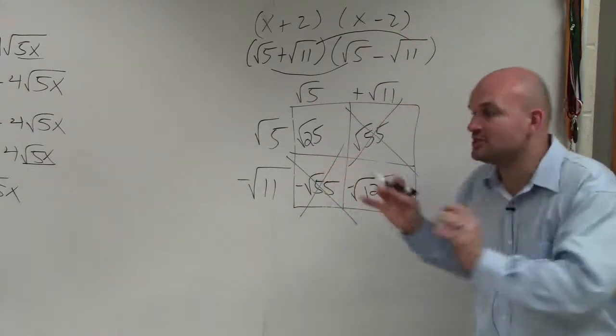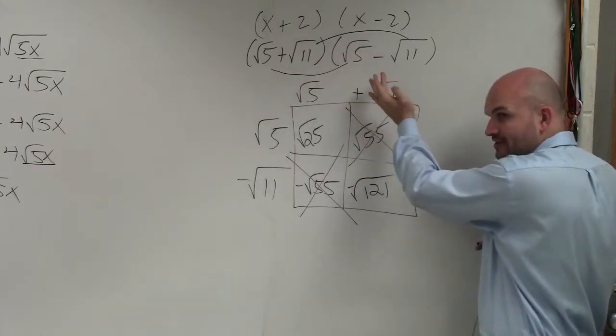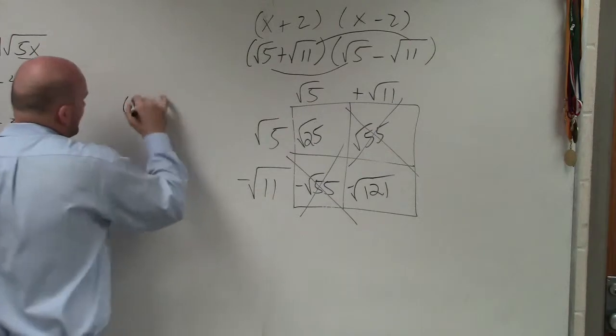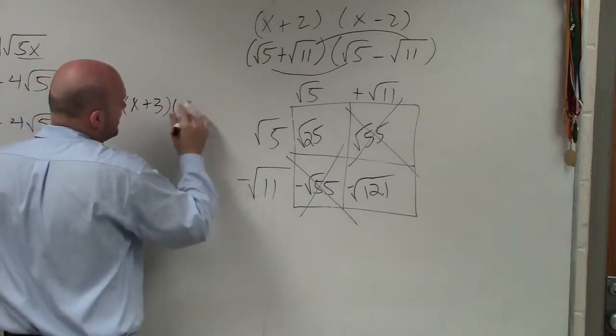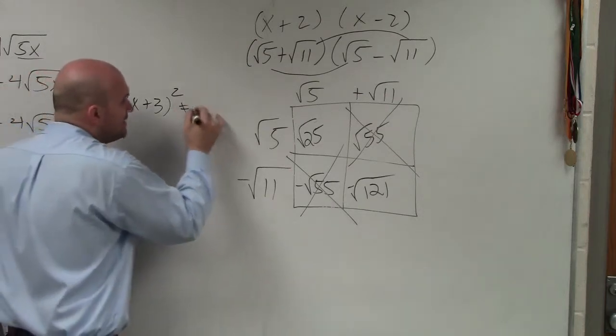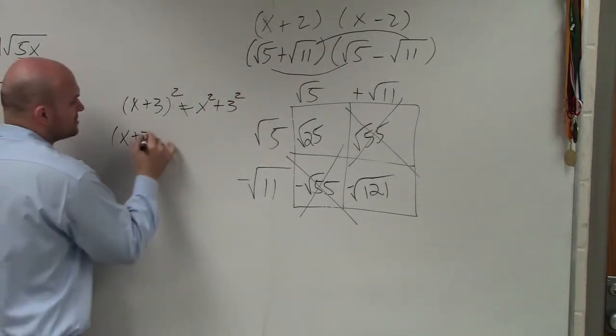That only works, though, when they're exactly the same, one positive, one negative. Do not do this to other numbers. For instance, like x plus 3 times, this one gets the students, like x plus 3 squared does not equal x squared plus 3 squared. You've got to multiply them out, just like we did before.